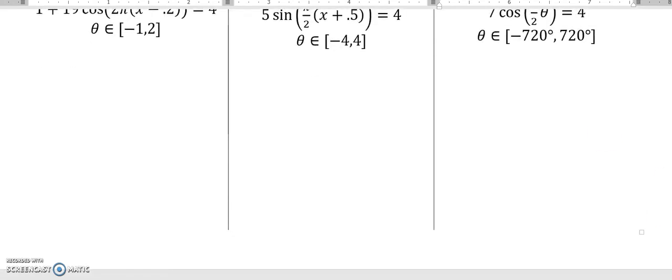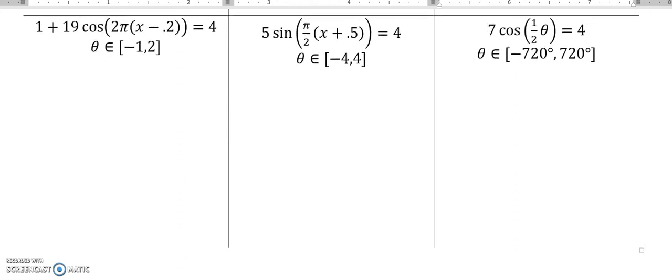As I go to do these, first one I notice is in radians, so I make sure my calculator is in radians. I also notice it has this multiplier 2π, so my period is 2π divided by that multiplier, 2π over 1, so I have a period of 1.